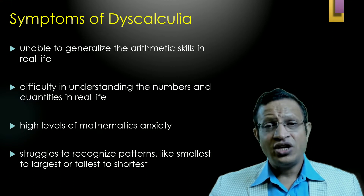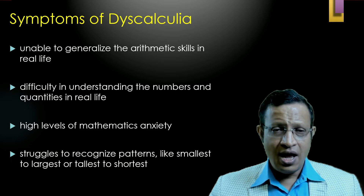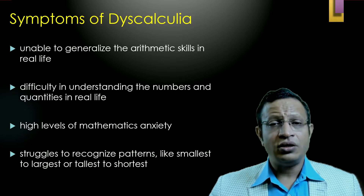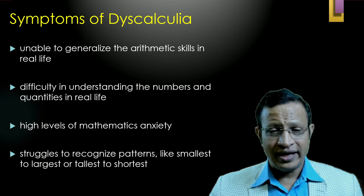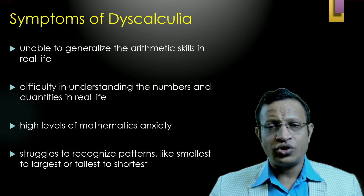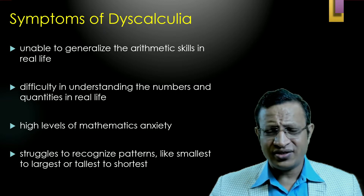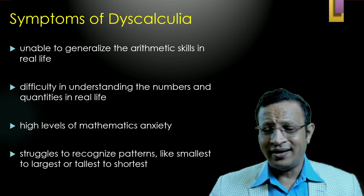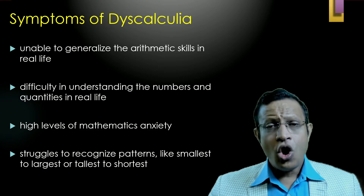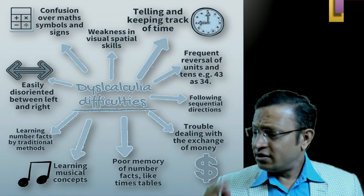Dyscalculia can be considered as number dyslexia or numbers dysgraphia. It is bigger than just mathematical mistakes — it is a repeated, consistent problem which occurs in calculation. It is difficult to understand the wider concept of numbers, or the rules and regulations which play a role in arithmetic.